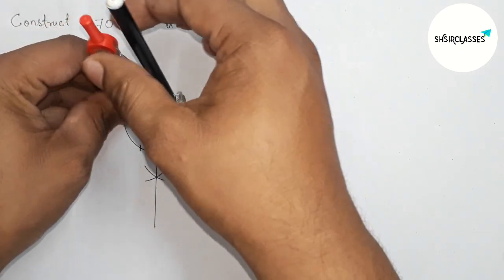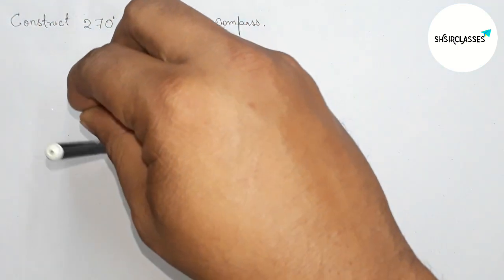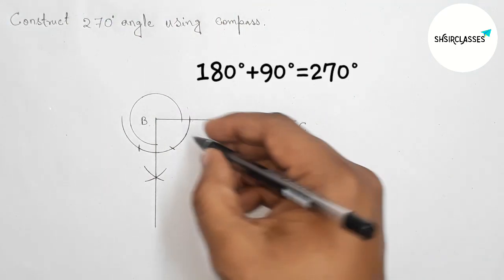going to mark the 270-degree angle with the help of a compass. Drawing an arc from the line BC to this line. This